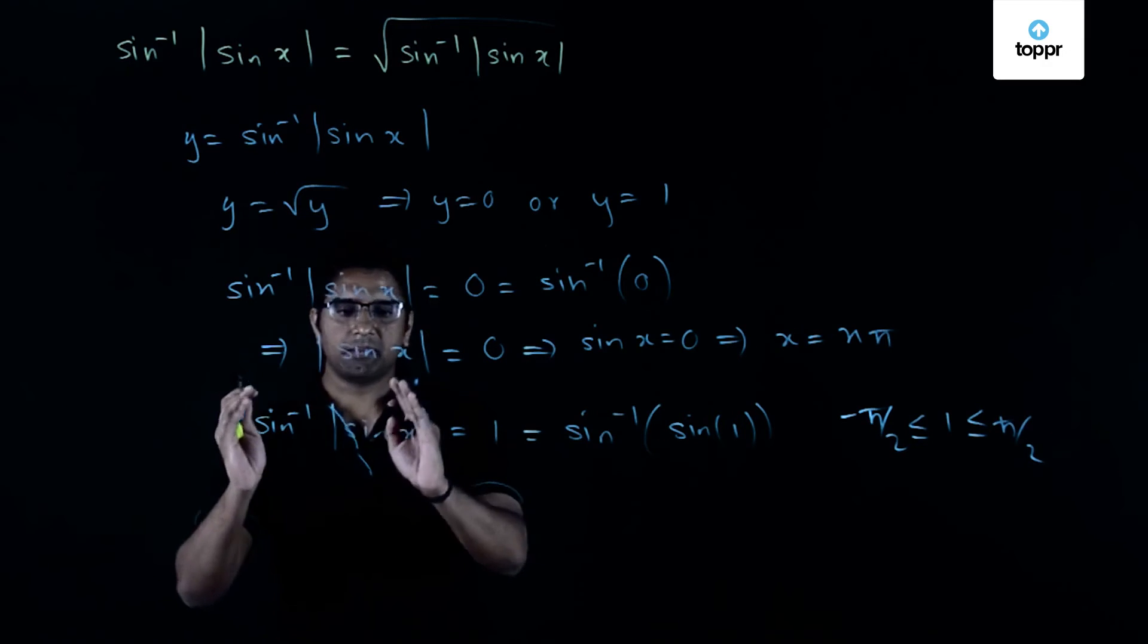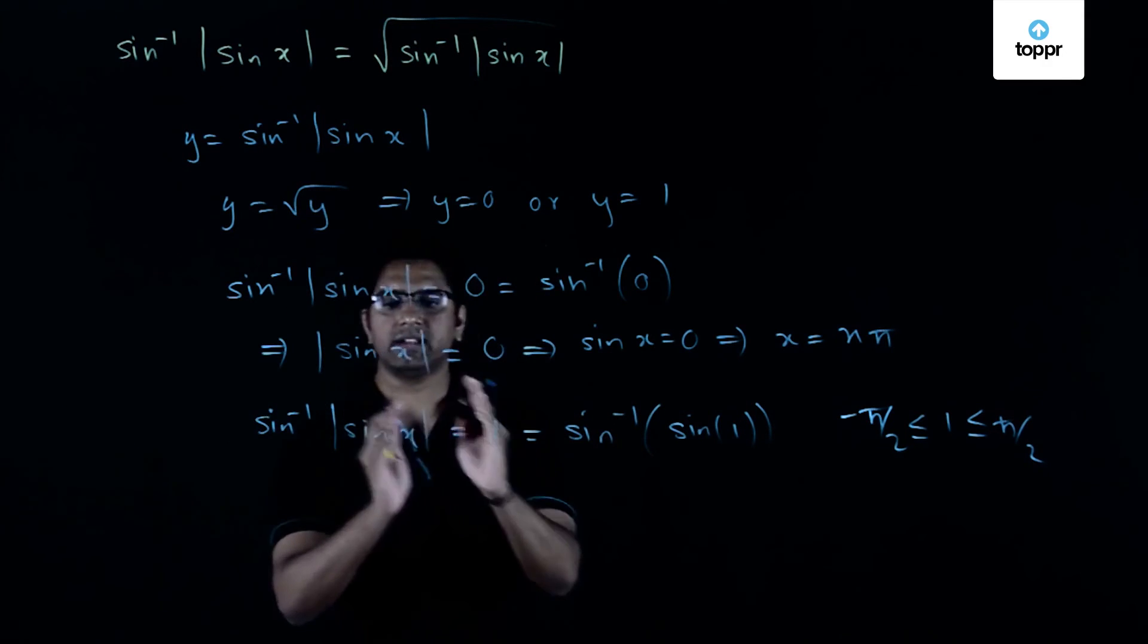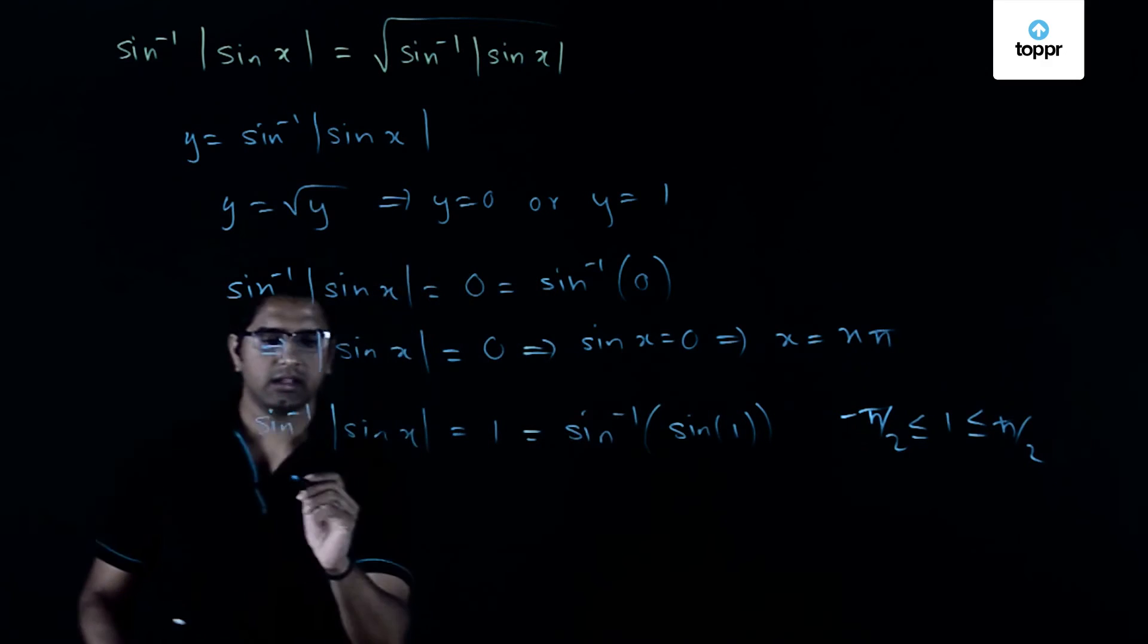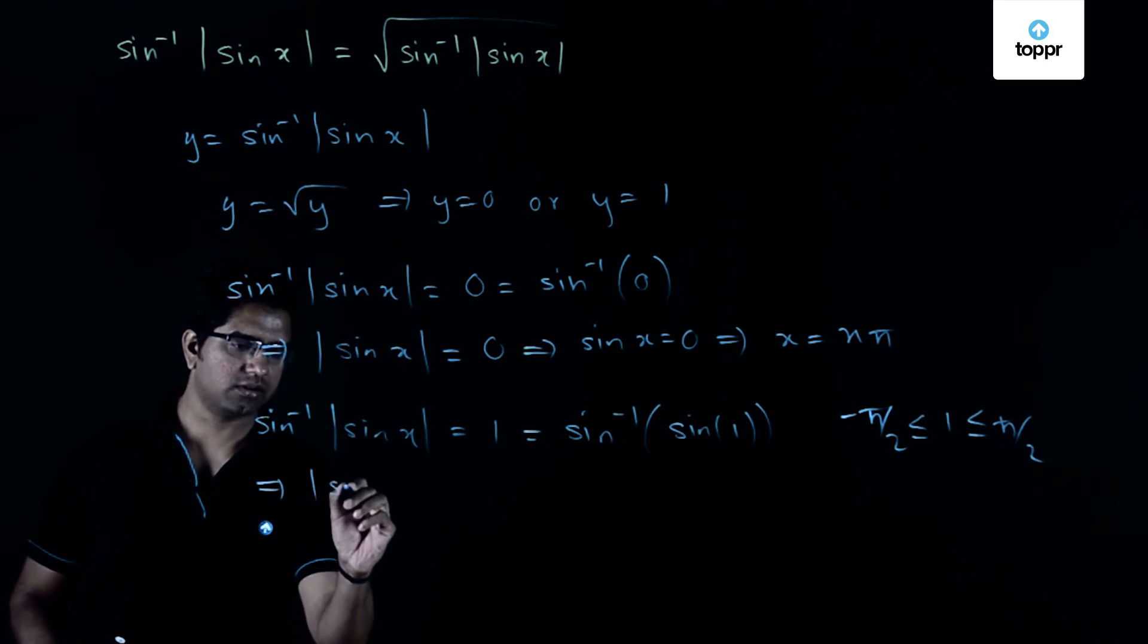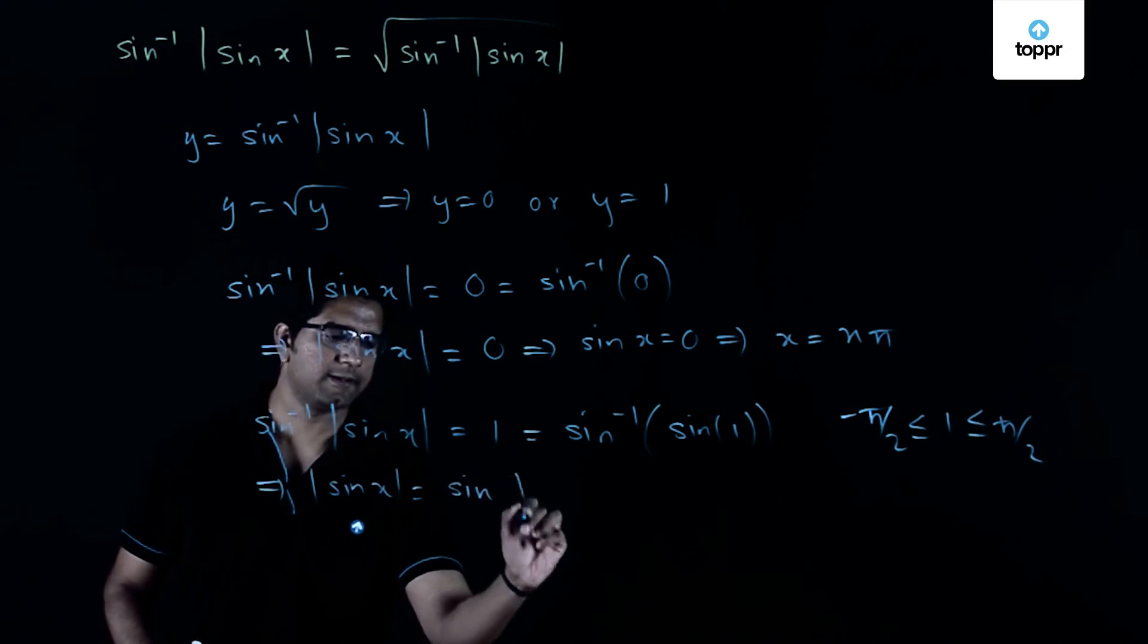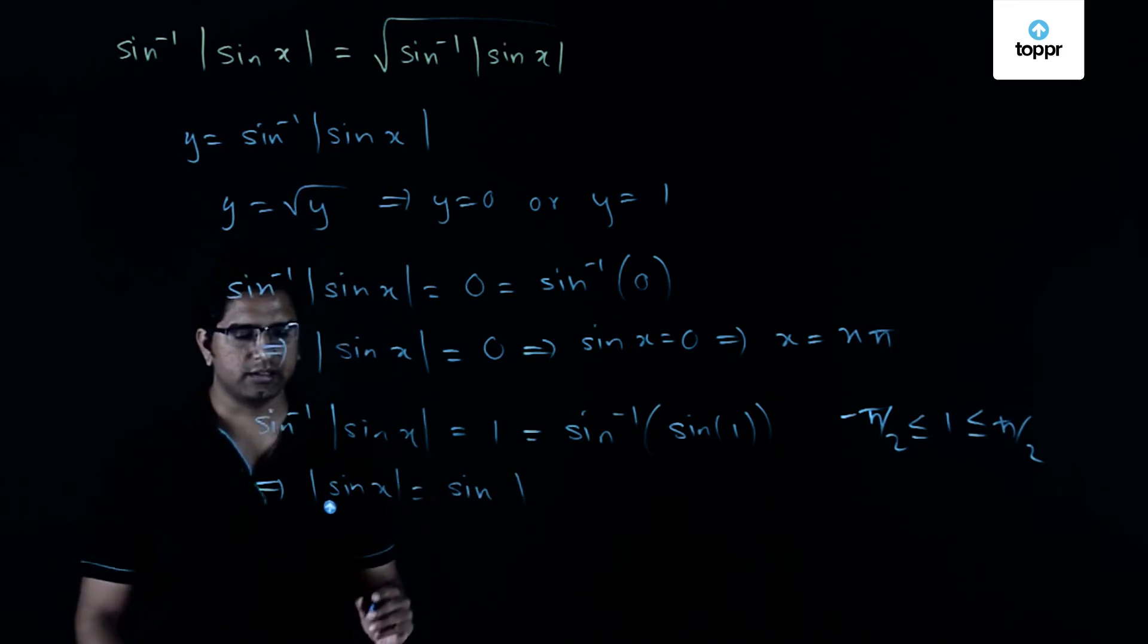Once I am able to write this kind of thing, then I can equate the two things here, that is the magnitude of sine x and sine 1. So this immediately gives us the magnitude of sine x is equal to sine 1.